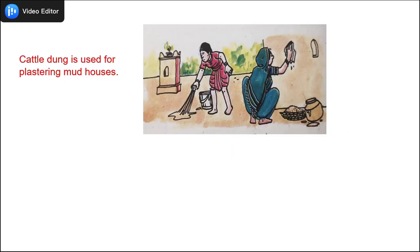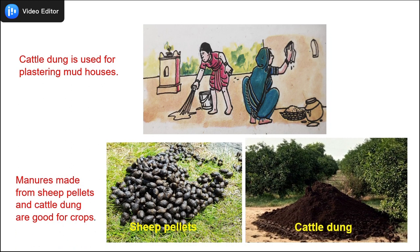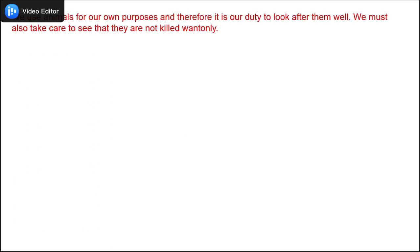Cattle dung is also used for plastering mud houses — I'm sure in your villages you do that, all mud houses are plastered with cattle dung. Manure made from sheep pellets and cattle dung is good for crops. You can see sheep pellets on your left — the dung of sheep, which are all like small black tablets — and on the right you can see the cattle dung, or what we call gobar. They are very good for crops.